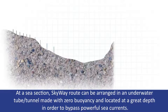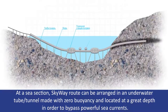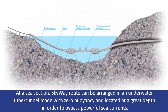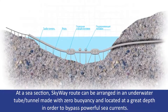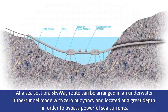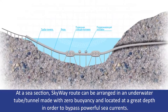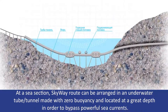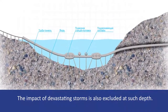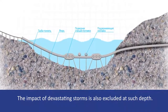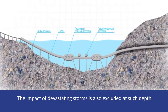На морском участке трасса SkyWay может размещаться в подводной трубе-тоннеле, выполненной с нулевой плавучестью и размещённой на большой глубине с целью обхода мощных морских течений. На такой глубине также исключается воздействие разрушительных штормов.